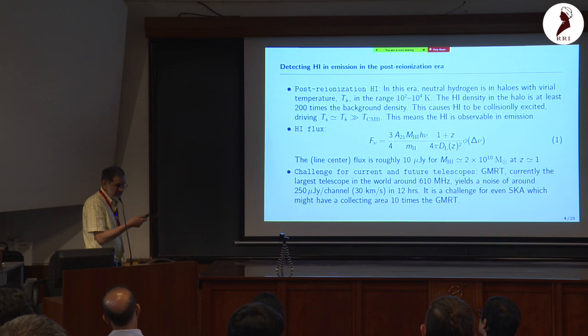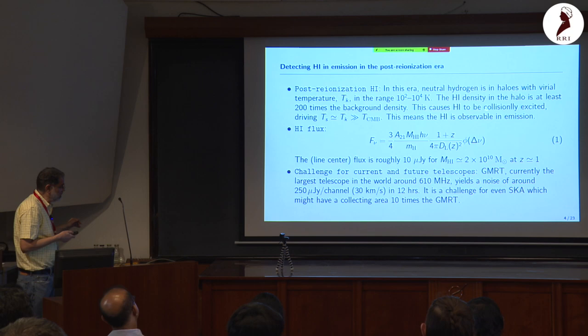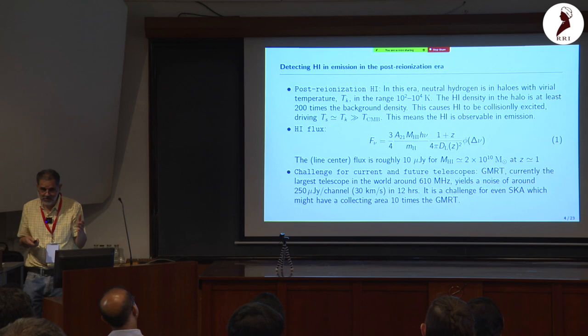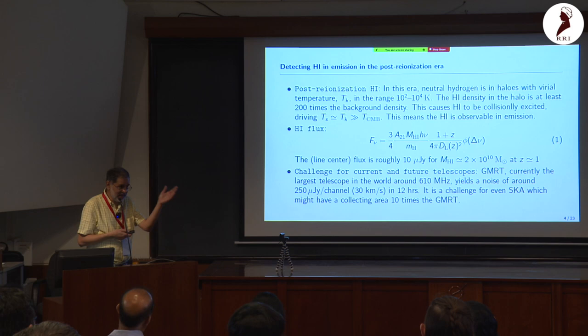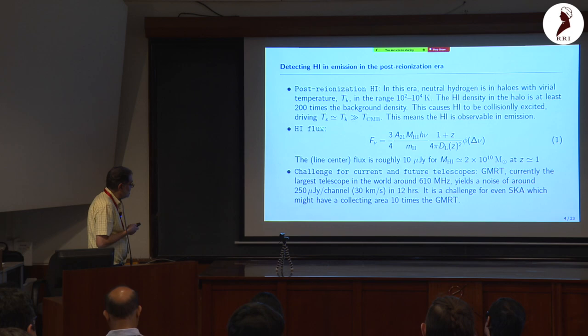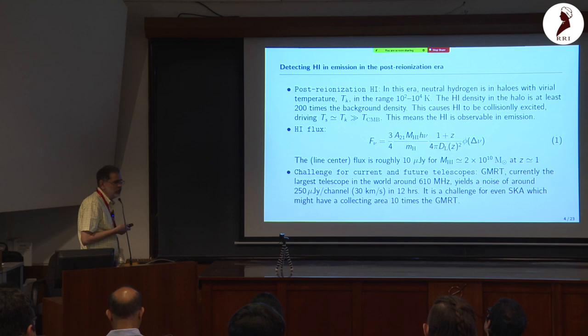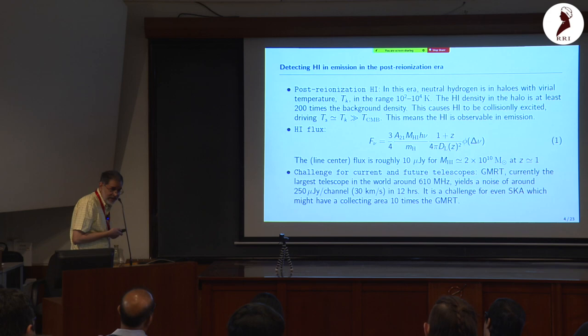Unlike cosmic dawn, we do not need to worry about the spin temperature being below the CMB temperature here. Collisions excite the gas so that the spin temperature is comparable to the kinetic temperature, which is well above T_CMB. So all the gas available to us in the halo is seen in emission, not in absorption. That is the first key lesson: it is all in emission.